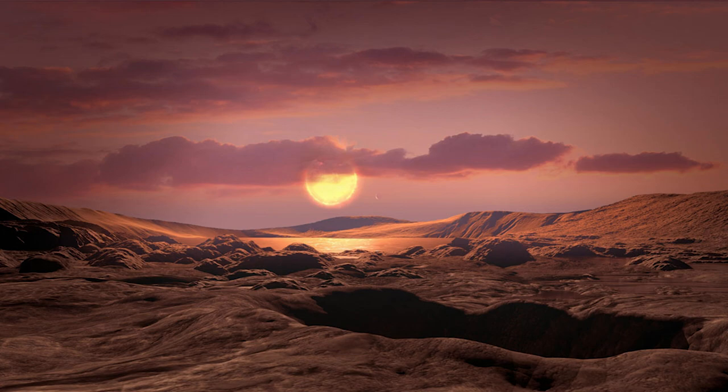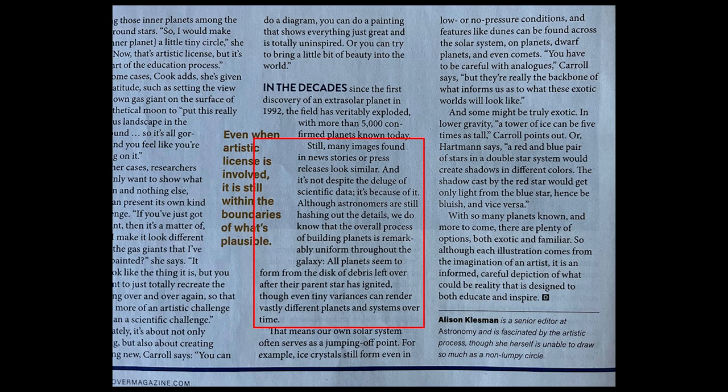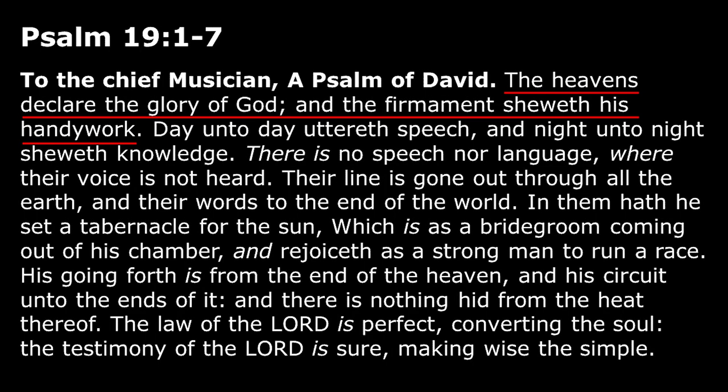They say the building of planets is uniform throughout the galaxy and all planets form from a disk of debris — but these celestial bodies were formed when God said. He's the one that put everything out there and he knows exactly what's there; they're not forming now. The statement says it 'could be reality' — it's not reality, it really can't be reality. But it is designed to educate, and that's the big problem: we're educating people as fact when really it is just somebody's imagination.